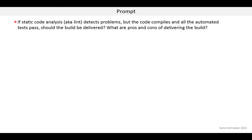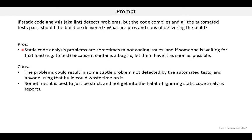If you're doing a build and static code analysis (also known as Lint) detects problems, but the code compiles and all automated tests pass, should the build be delivered? The pros are that static analysis problems are sometimes minor coding issues, not big deals, and if someone is waiting for a bug fix they want it as soon as possible. The cons are that the detected problems could result in subtle issues not caught by automated tests, wasting the time of anyone using that build. Also, we may want to be strict — not get into the habit of ignoring static code analysis reports and require those issues to be fixed before delivering a build.